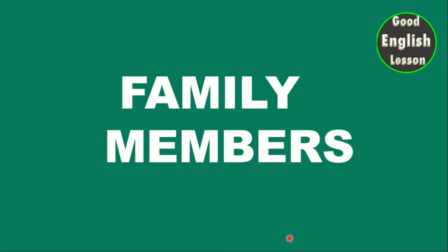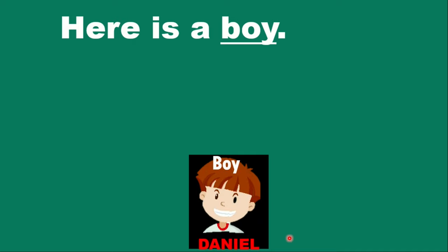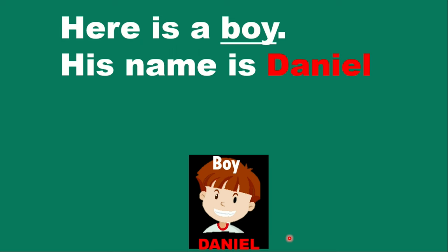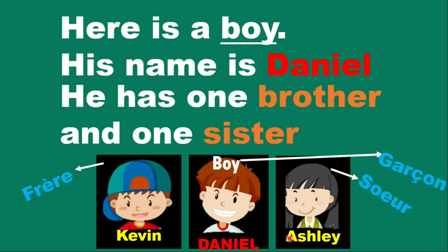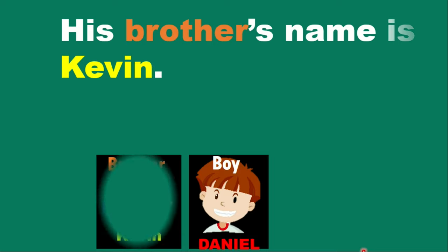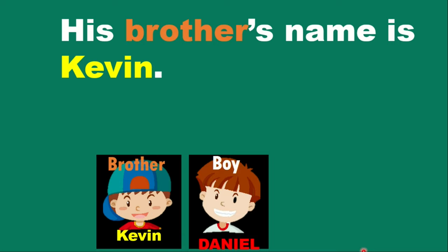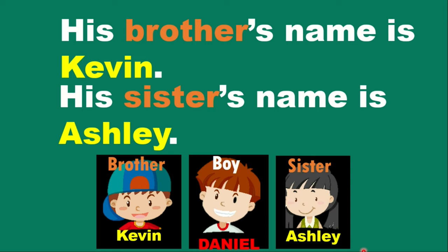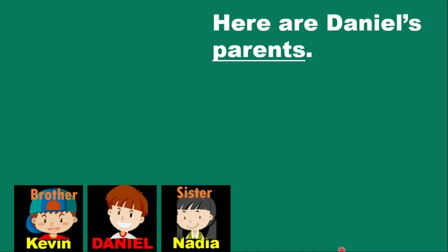The second part is about family members. Here is a boy — his name is Daniel. He has one brother and one sister. On the left is the brother and on the right is the sister. His brother's name is Kevin and his sister's name is Ashley.